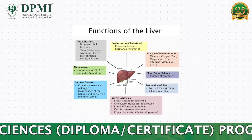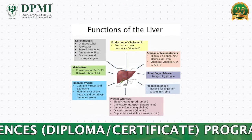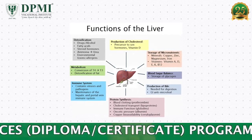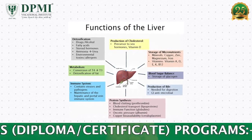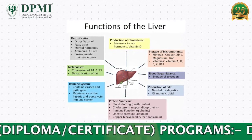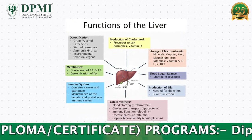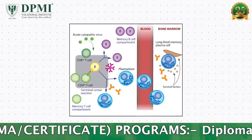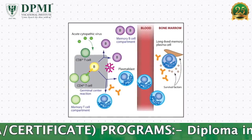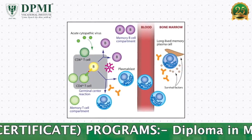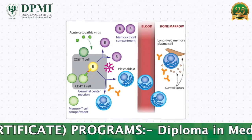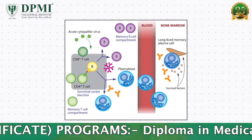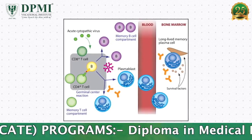Globulin is also synthesized in the liver, except for immunoglobulin or antibody which is synthesized in the plasma cells and lymphoid tissue.